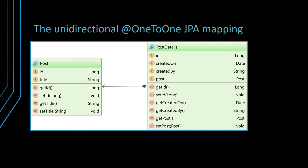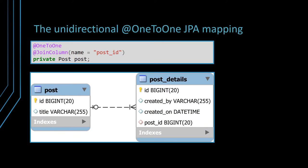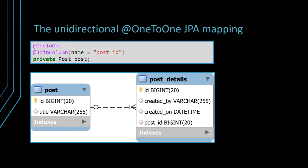A unidirectional one-to-one JPA entity relationship looks as follows. The postDetails entity has a post property which references the parent post entity. Just like the many-to-one JPA relationship, by default, the one-to-one JPA association expects a foreign key column whose name is formed by joining the one-to-one property name with the entity identifier via an underscore character. If the foreign key column is different than the implicit one, you need to specify it via the JoinColumn annotation.